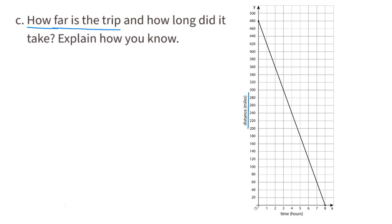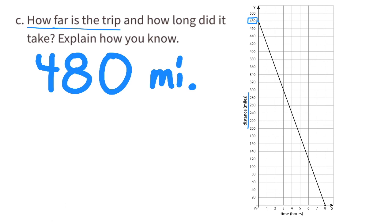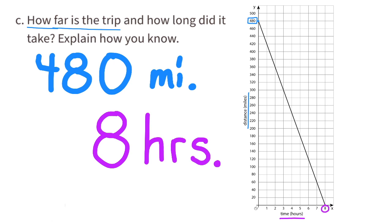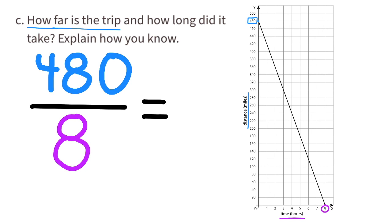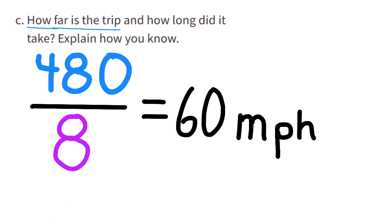C: How far is the trip, and how long did it take? We can look at the y-axis and see that the length of the trip is 480 miles. We can look at the x-axis and see that the trip took eight hours. Let's double-check: they were traveling at a constant rate of 60 miles an hour, and 480 divided by 8 equals 60 miles an hour.